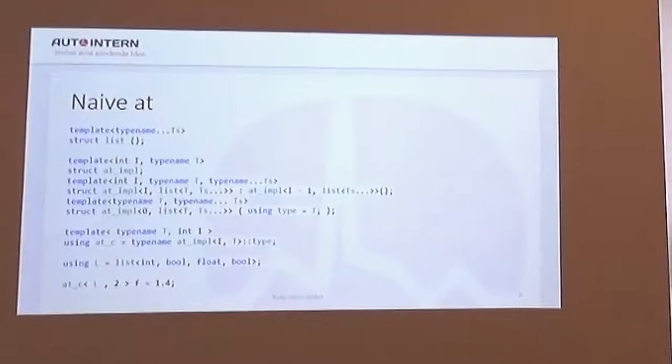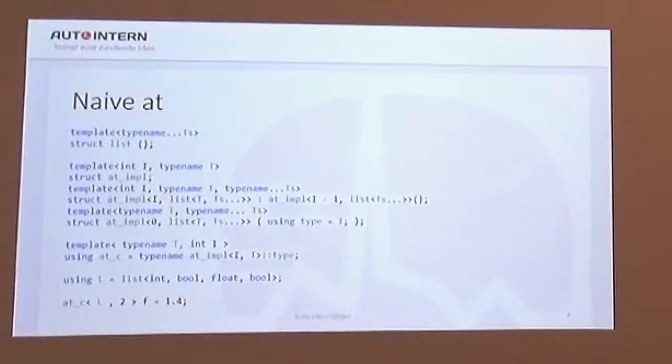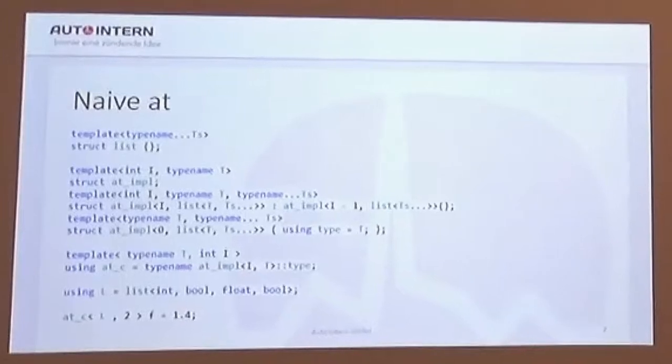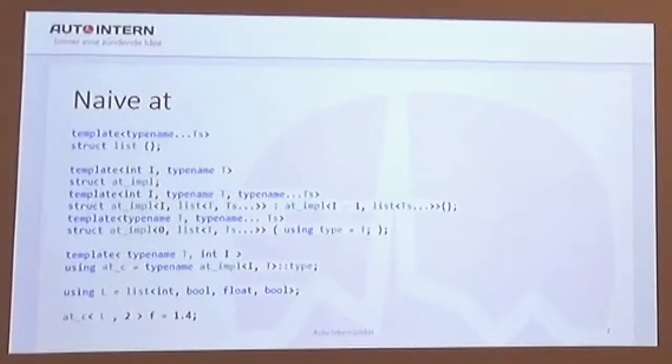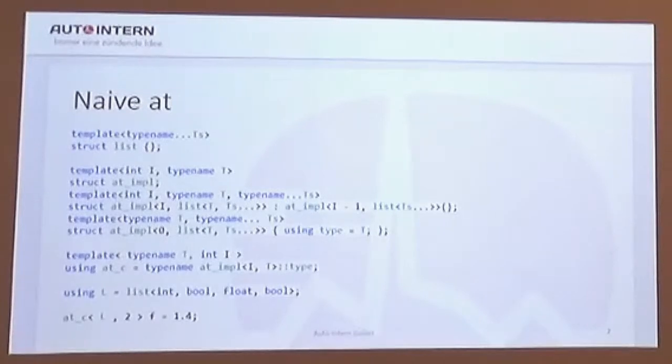this is like a naive implementation of indexing in a compile-time algorithm. The problem here is, as we go through this list of types, throwing away one and decrementing how many we have to throw away, we're creating a lot of intermediate types.